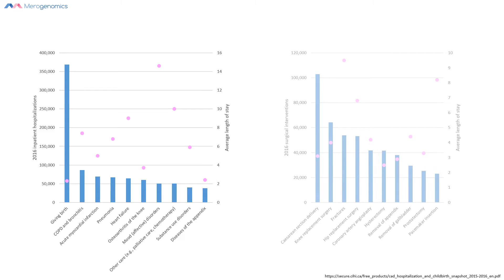The right-hand panel shows the top events why Canadians are hospitalized, and usually these are different surgical procedures. In blue bars you can see the number of hospitalizations required, whereas the pink circles denote how many days each surgery or procedure required a patient to stay.